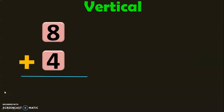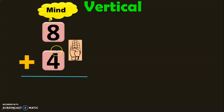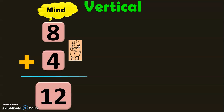Let us learn vertical addition now. We saw that vertical addition means numbers are written in a vertical direction, one below the other. Here we have 8 plus 4. In vertical addition, the plus symbol is written to the left of the second number and the answer is written at the bottom. The method of addition is the same: have 8 in the mind and 4 in your fingers. After 8: 9, 10, 11, 12. So the sum of 8 plus 4 is equal to 12.